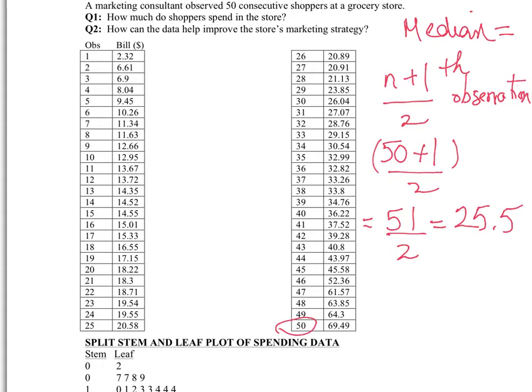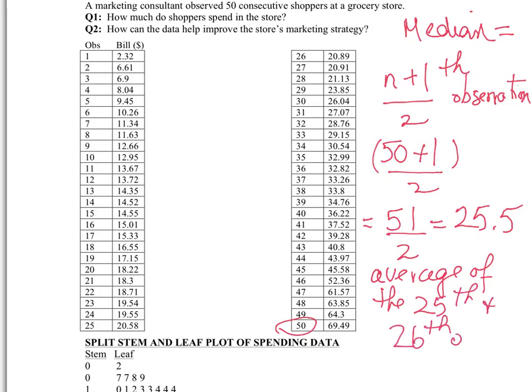What does that mean? It means that the median will be found at the average of the 25th and 26th observation. So where is that going to be? Pretty clear since I have everything ranked in order — if it wasn't, you would have to put them in order. So here's the 25th, here's the 26th observation. Let's take the average of them, and that will be your median.